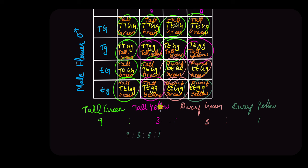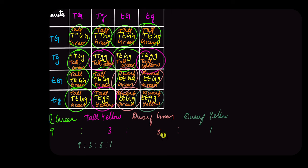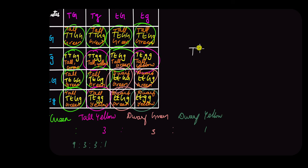Mendel obtained this ratio, which made him realize that inheriting one trait is independent of inheriting another trait. So 4 different gamete combinations are possible in this case and inheriting of one trait has no effect on inheriting the other trait. And this he formulated as his law of independent assortment.